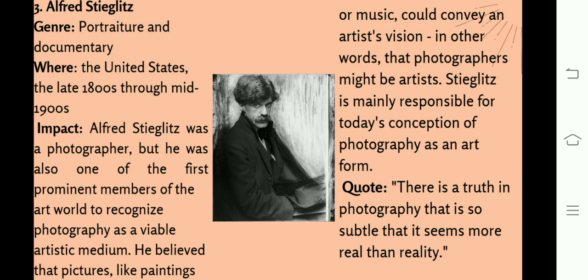Alfred Stieglitz worked in portraiture and documentary photography in the United States from the late 1800s to mid-1900s. He was a photographer, but also one of the first prominent members of the art world to recognize photography as a viable artistic medium. He believed that pictures, like paintings or music, could convey an artist's vision — that photographers might be artists. Stieglitz is mainly responsible for today's concept of photography as an art form. His famous quote: 'There is a truth in photography that is subtle, that seems more real than reality.'